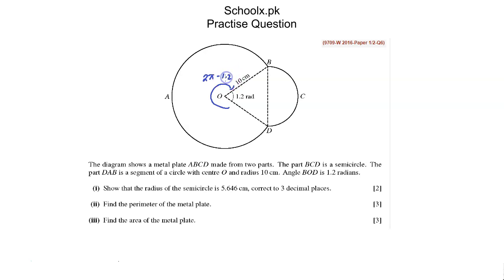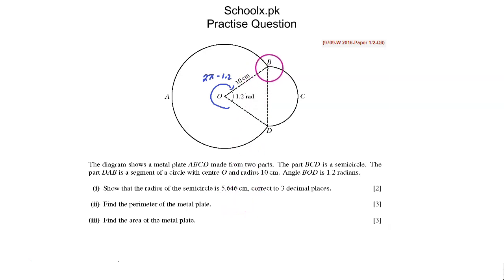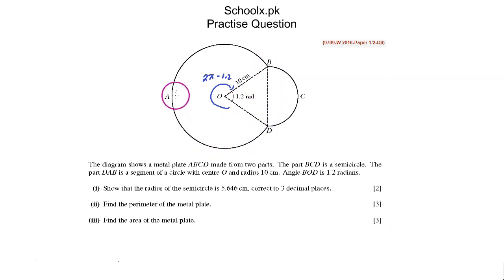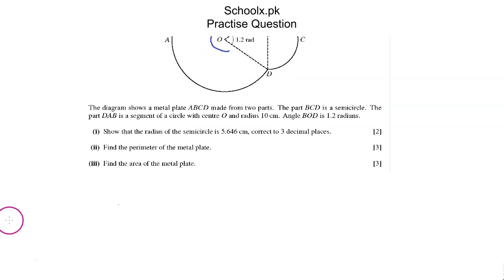In the first part, they ask us to show that the radius of the semicircle is 5.646 cm. We can see that triangle BOD is an isosceles triangle — OB is 10 cm and OD is also 10 cm, because OB and OD are both radii of the segment DAB.